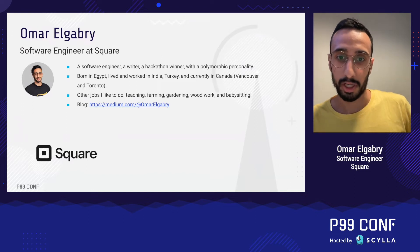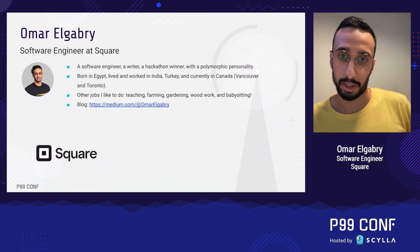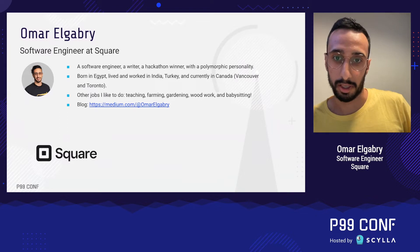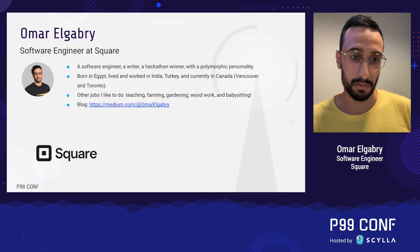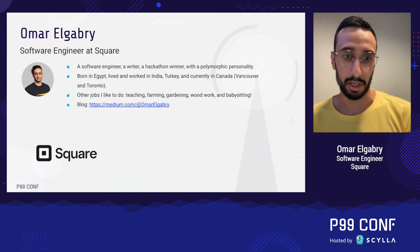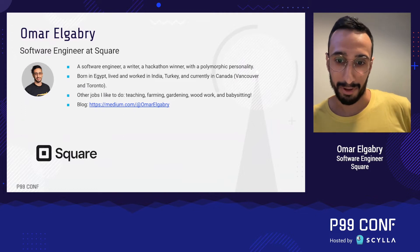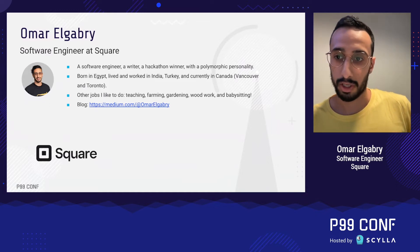I'm a software engineer at Square. I was born in Egypt, lived and had a job in India, Turkey, and currently in Canada — in Vancouver on the west side and Toronto on the east side. Other things I like to do: teaching, farming, gardening, woodwork, and surprisingly, babysitting. I have a blog covering software engineering processes, algorithms, data structures, distributed systems, and software engineering teams.